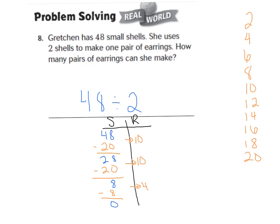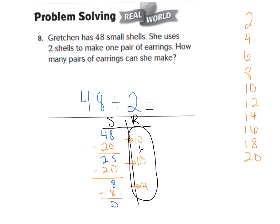8 is a multiple of 2, so I subtracted another 20: 28 minus 20 is 8, another 10 groups. Then 8 minus 8 is 0 — that's 4 groups because 2 times 4 is 8. I cannot subtract any more groups of 2 from 0. Looking at my groups: 10 plus 10 is 20, and 20 plus 4 is 24. So 48 divided by 2 is 24 pairs of earrings.